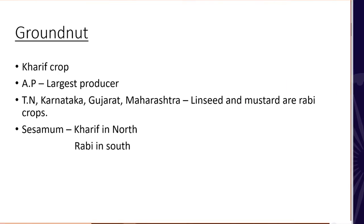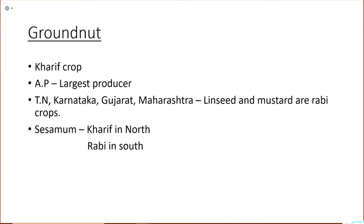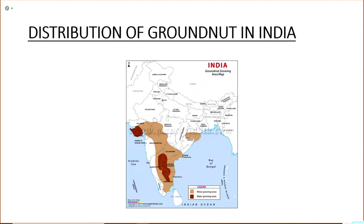Groundnut is the most important oil seed produced in India, grown as a Kharif crop. Andhra Pradesh is the largest producer of groundnut; Tamil Nadu, Karnataka, Gujarat and Maharashtra also grow groundnut along with linseed and mustard. Sesame is grown as a Kharif crop in northern India and as a Rabi crop in southern India. From the distribution map, groundnut is mostly grown in areas with black soil — the southern Deccan region has the main concentration of black soil, which is why groundnut is predominantly grown in peninsular India.